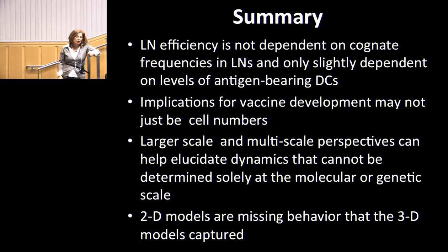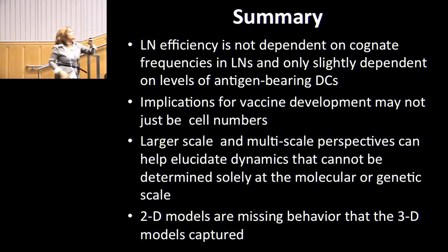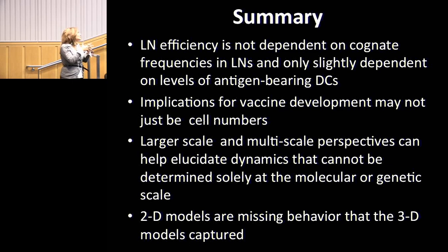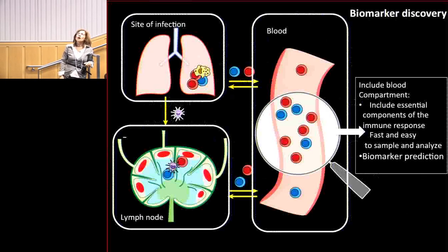A larger-scale and multi-scale perspective helps elucidate dynamics that can't be determined solely at the molecular or genetic scale. Fred found that 2D models of the lymph node — which groups have been building for five to ten years — don't correctly capture the behavior seen in 3D. He built a 3D model and collapsed it down to 2D for comparison, and you don't get the right predictions in 2D. In this system where space is critical and how cells find each other matters, the dimensionality of your model really matters. We hope people will build models in both 2D and 3D and do comparisons.